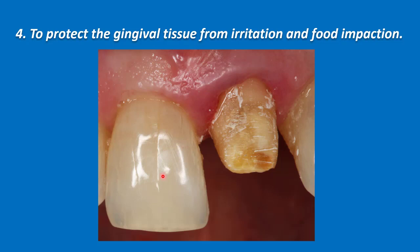Fourth, to protect the gingival tissue from irritation and food impaction. As you can see, there is irritation and swelling of the gingiva because food, when it contacts the prepared tooth, doesn't slide on the tooth — it contacts the gingiva directly. Unlike the gingiva on the adjacent tooth, which is healthy because food slides on the tooth, not reaching the gingiva.